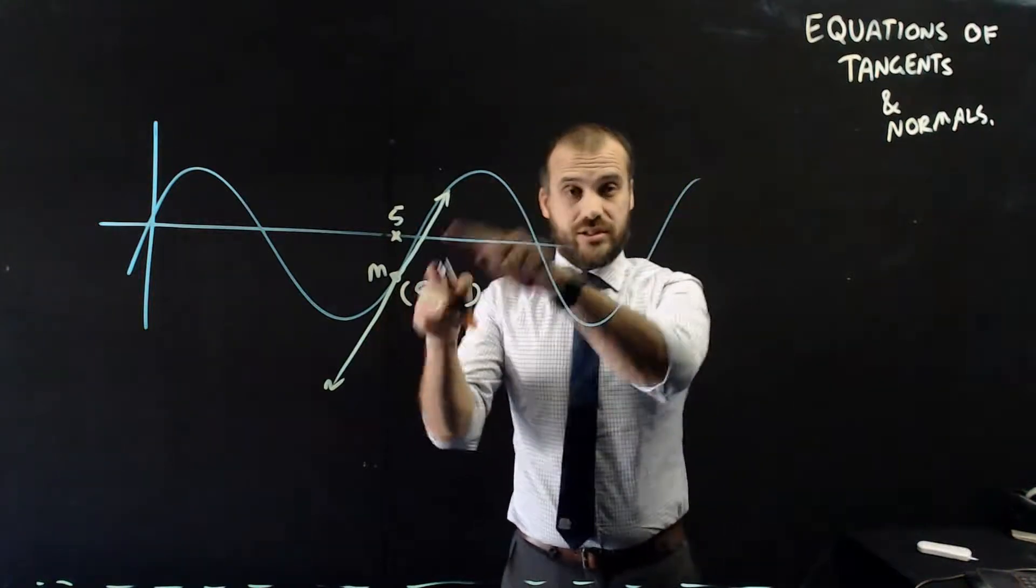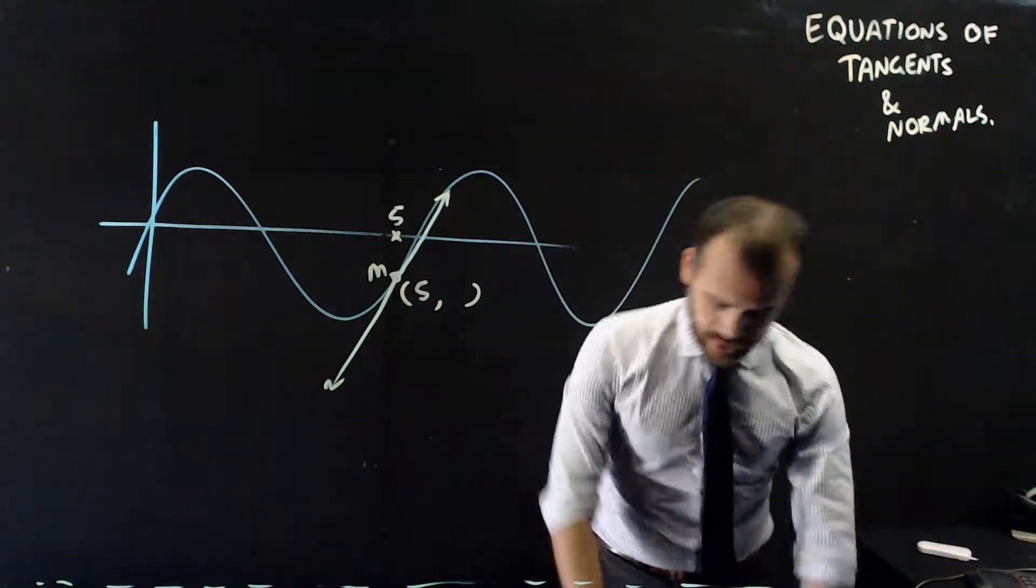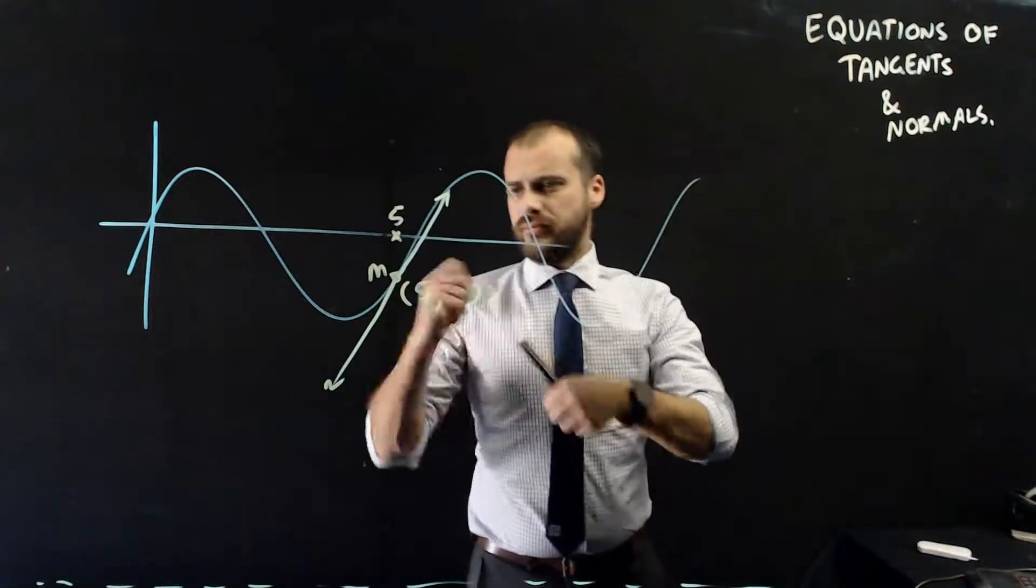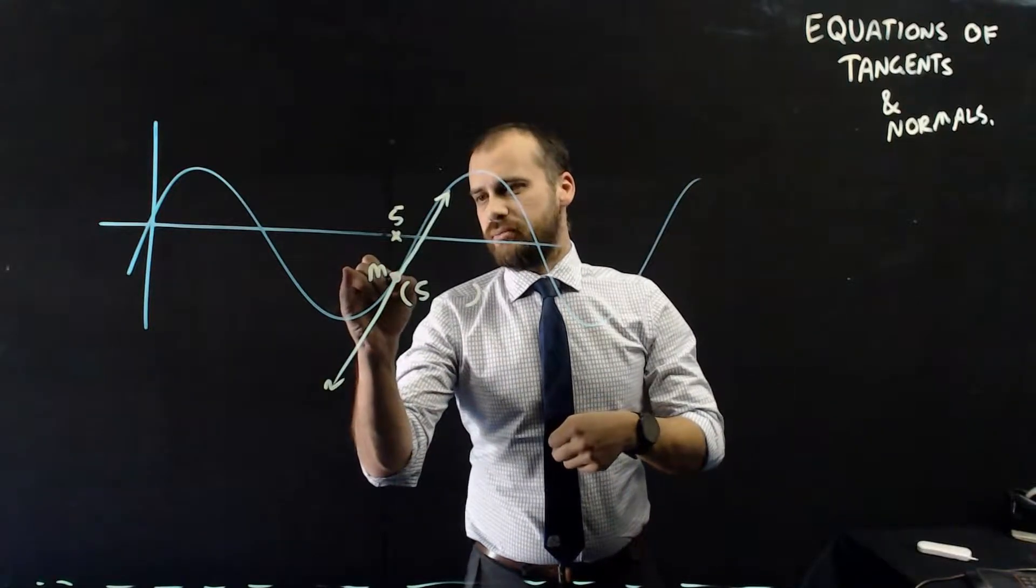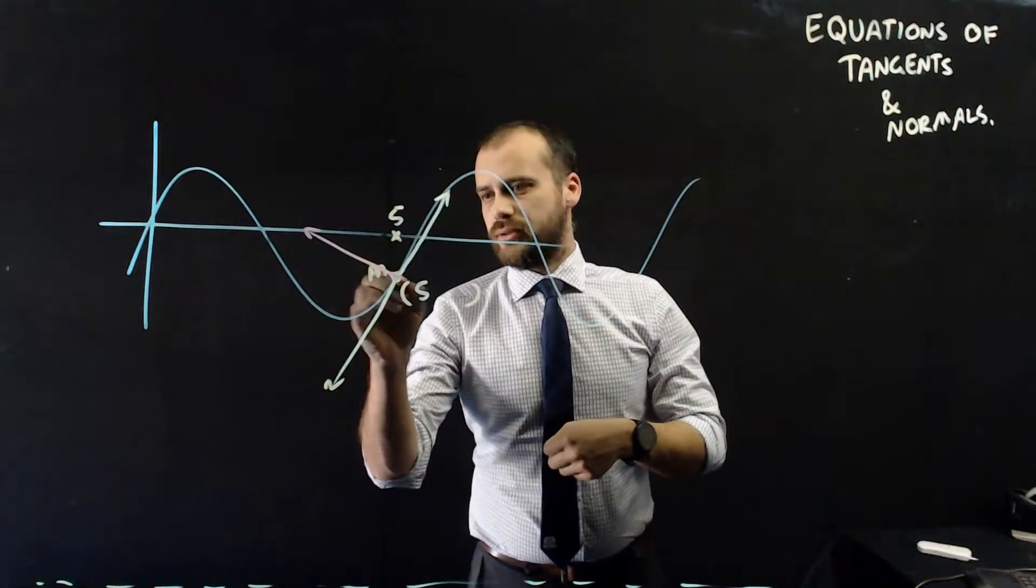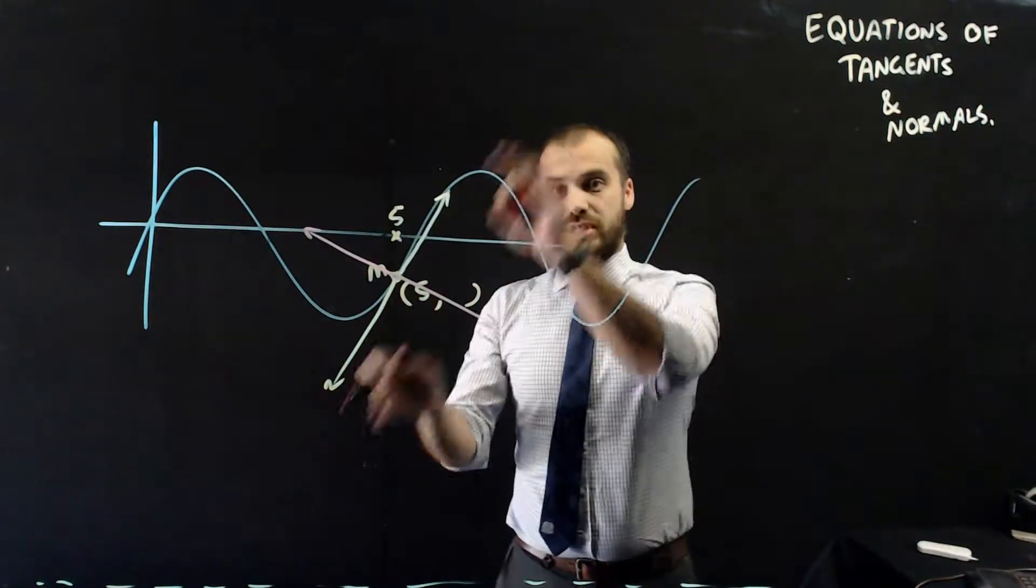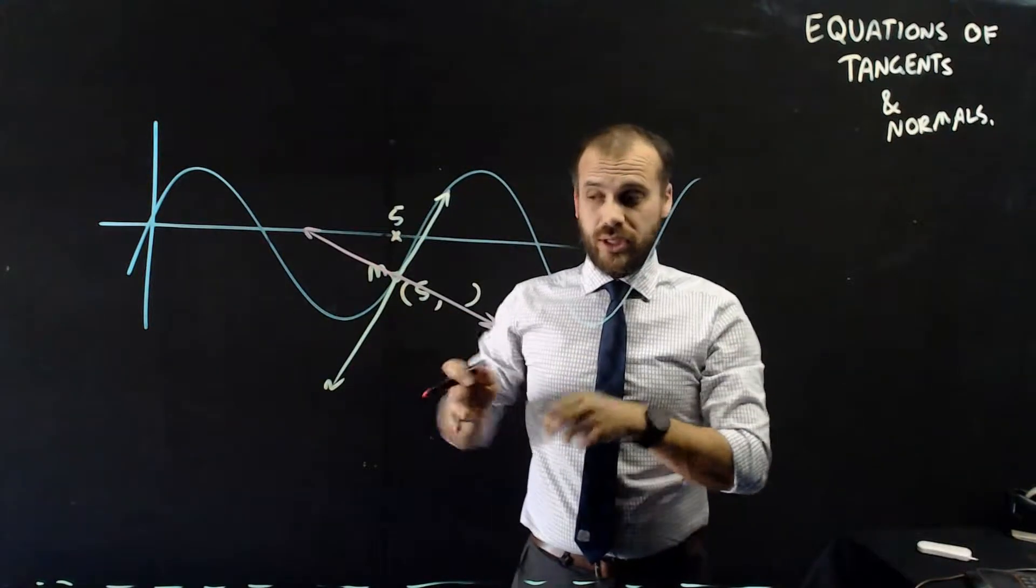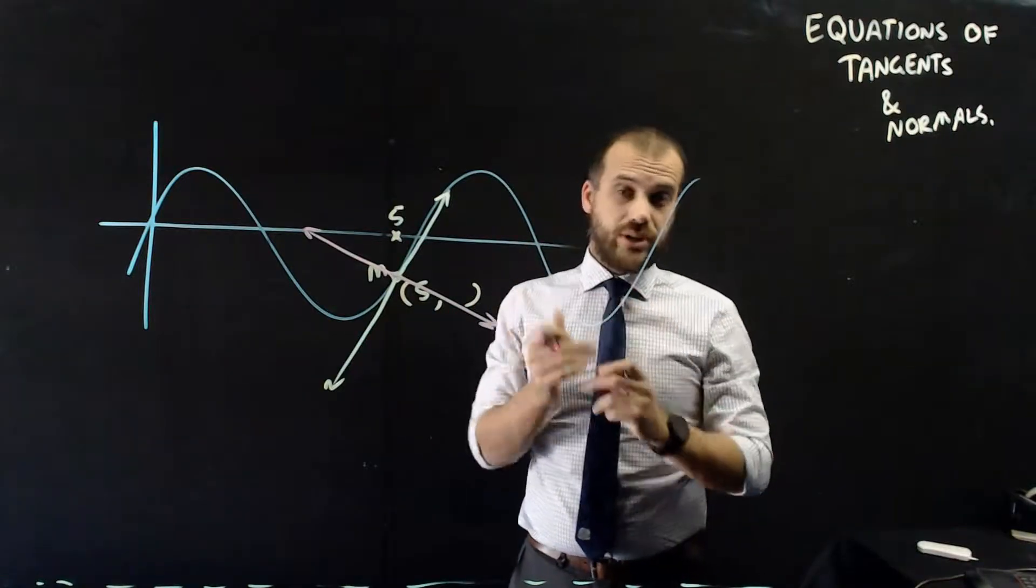Now, that's tangents. If we're trying to find a normal, the normal has a 90 degree, makes a 90 degree angle with the tangent. So that's the normal. We're going to deal with tangents, we're going to deal with normals.